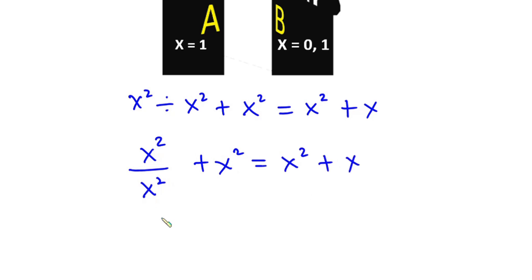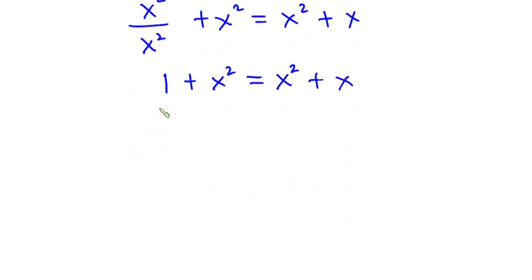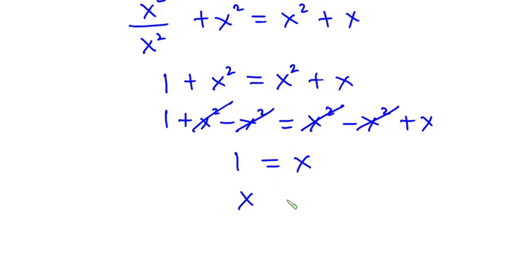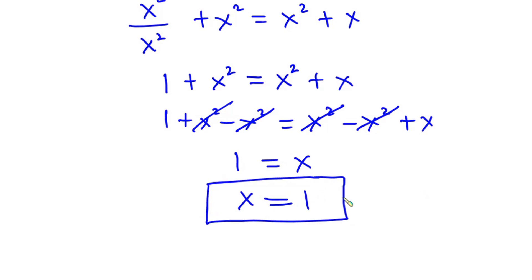Now x squared over x squared is 1, so we have 1 plus x squared equals x squared plus x. Adding negative x squared to both sides, we get 1 plus x squared minus x squared equals x squared minus x squared plus x. The x squared terms cancel on both sides, leaving 1 equals x. So this implies that x is equal to 1, according to contestant A — x is only 1.